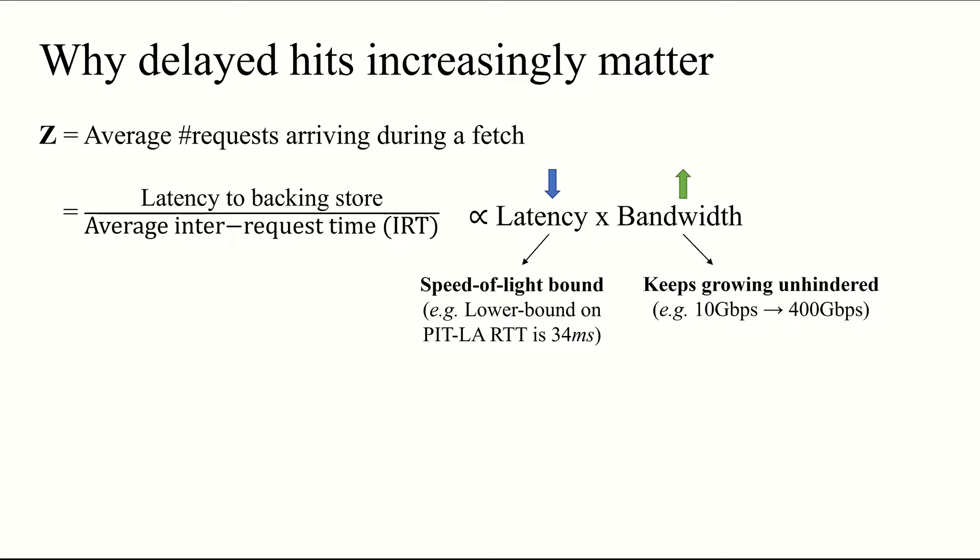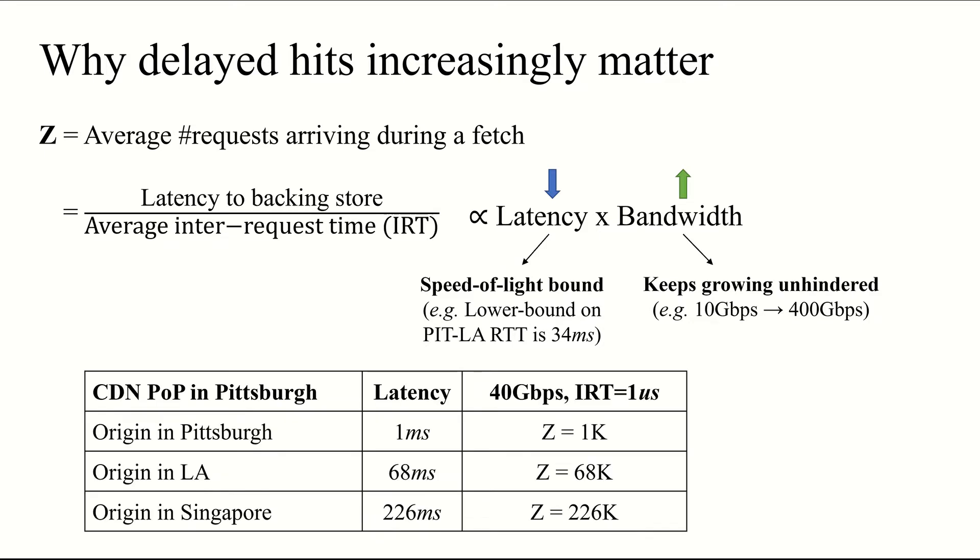Here's what this means for caches in practice. Consider a CDN point of presence in Pittsburgh, with origin servers in different parts of the world. We expect to see different Z values depending on the latency to the origin server. For a 40 Gbps link, this might range from 1,000 to a local server, all the way up to 226,000 for one located in Singapore. However, as the CDN link bandwidth increases, without a corresponding decrease in latency, we expect to see a higher number of requests to arrive during a fetch, increasing the number of delayed hits we see in practice. At 200 Gbps, this number could be as high as over a million for a remote store.